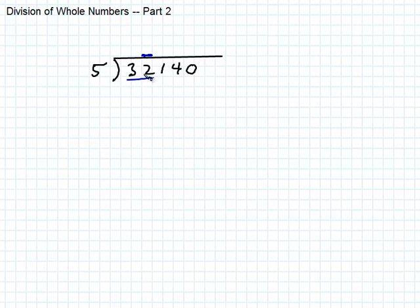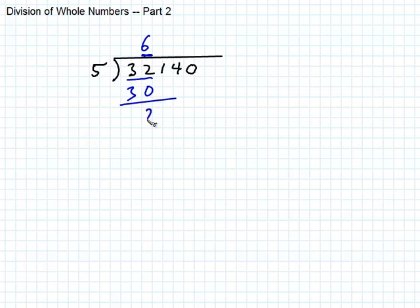So 5 was too small. 6 times 5 is 30, and 7 times 5 is 35 — that's too big. So it has to be 6. 6 times 5 is 30, subtract and I get 2. You probably ought to put the minus sign there while you're learning this. So we have a remainder of 2.